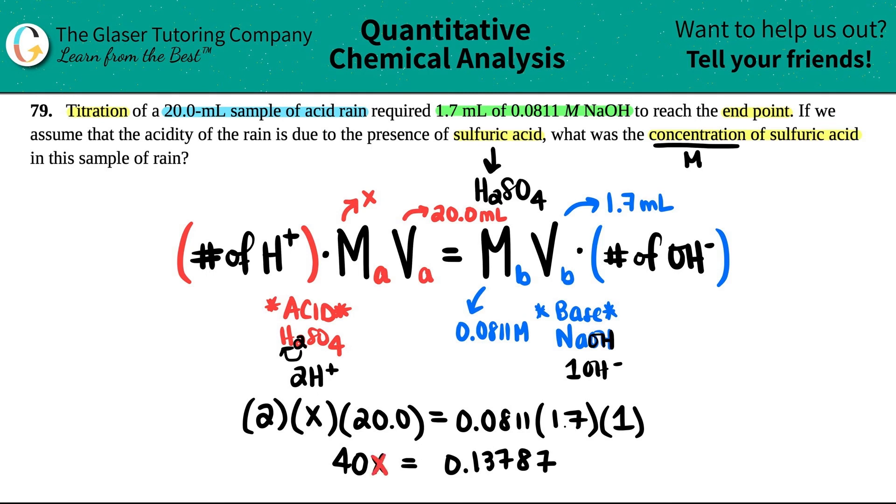We're solving for X, so I'm just going to divide by 40 on both sides. Looking at the question now, I see that I have three sig figs and two sig figs, so technically I can only use two sig figs here. So I'm just going to say that this would be 3.4 times 10 to the negative three. And then just units - this is molarity of the H2SO4.